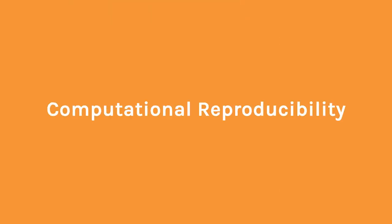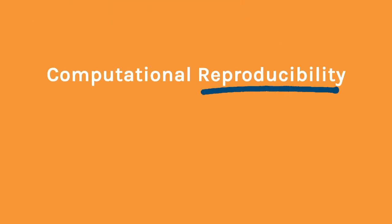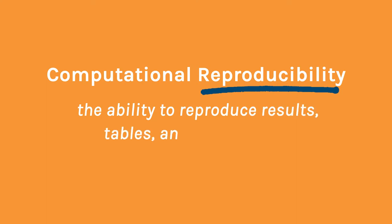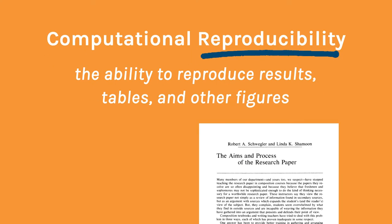Computational reproducibility, or simply reproducibility, is the ability to reproduce the results, tables, and other figures found in research articles using the data, code, and materials made available by the authors.